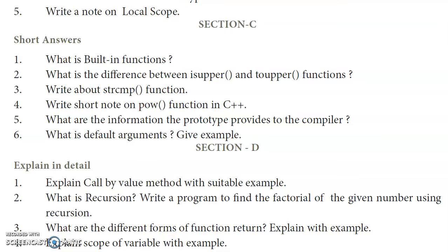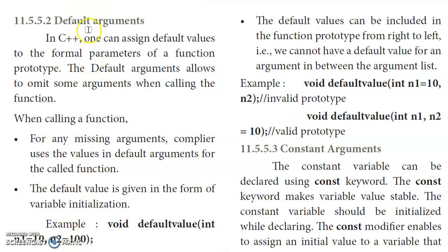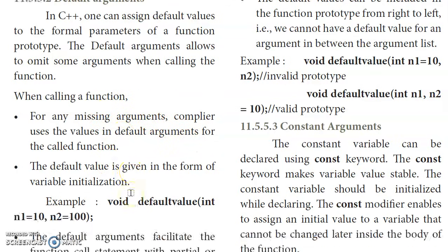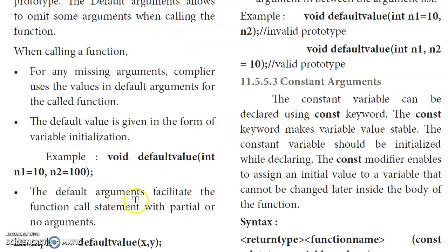What is a default argument? Give an example. From page 193. In C++, one can assign default values to the formal parameters of a function prototype. If the caller does not supply argument values, the default values are used. For example, n1 equal to 10 and n2 equal to 100 are default values.